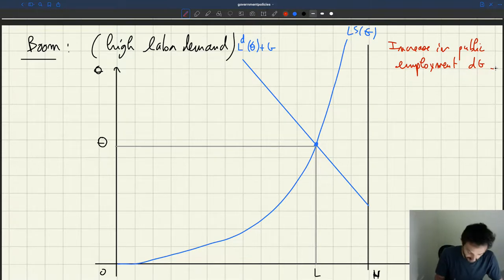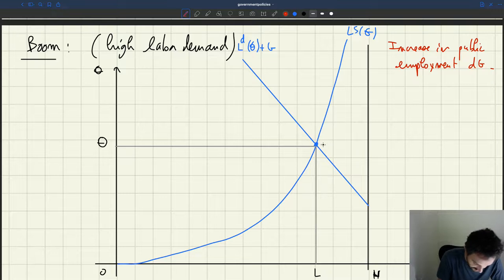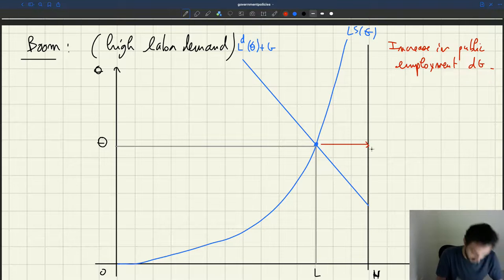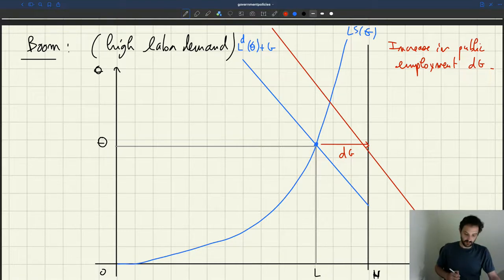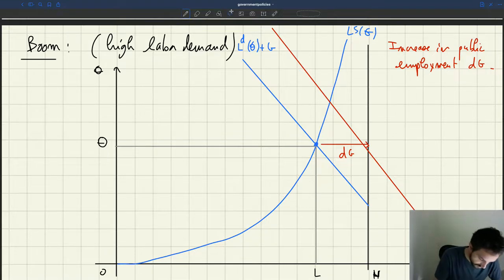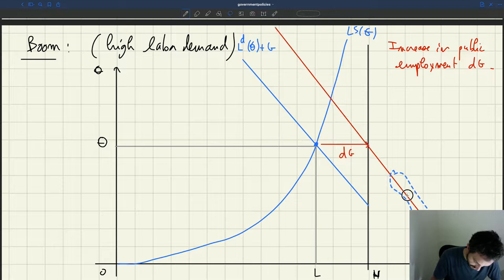The labor, aggregate labor demand is going to shift out by some quantity. So let's say starting from the equilibrium position we can increase public employment by DG like this. So the labor demand, aggregate labor demand has to shift parallel to this point. Okay.